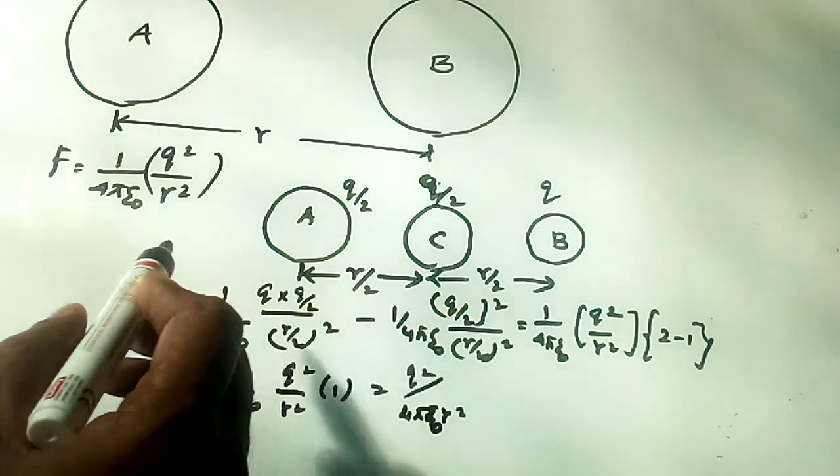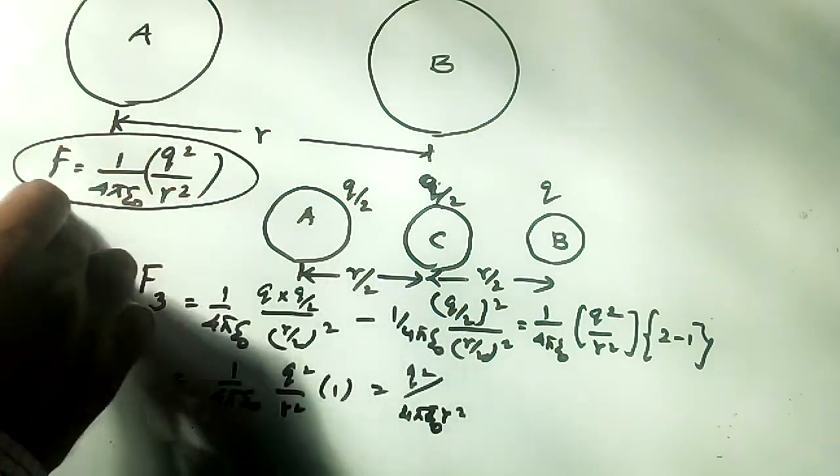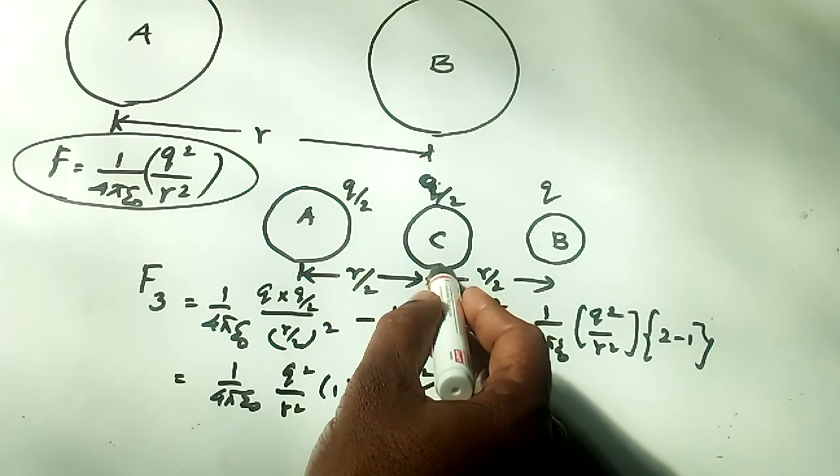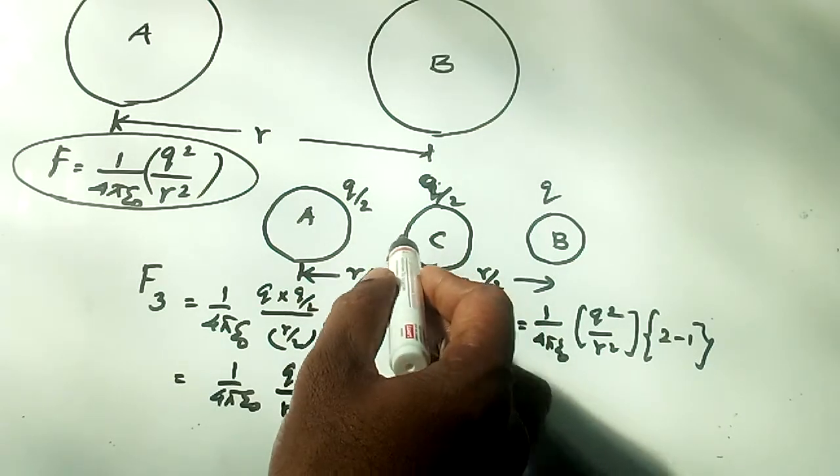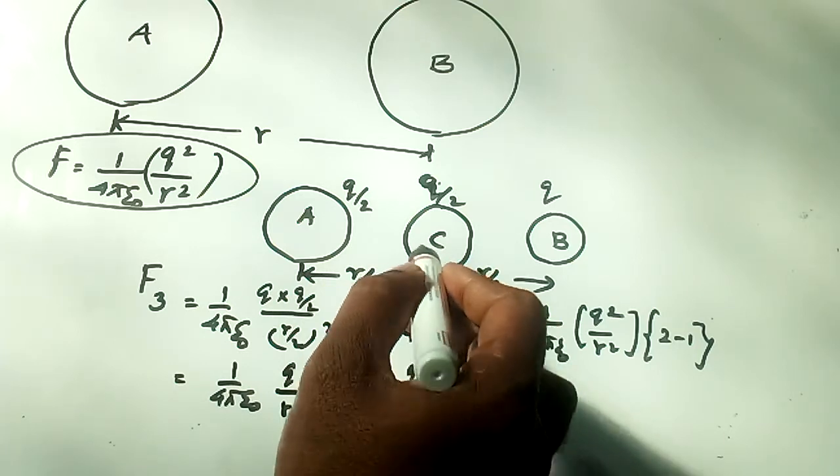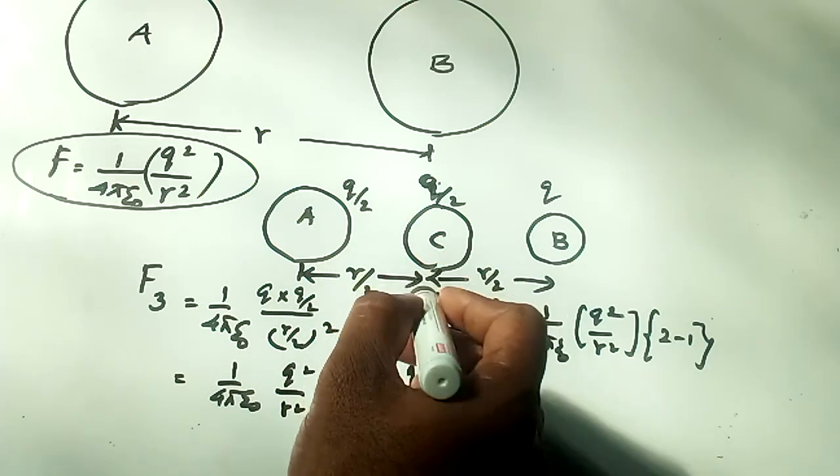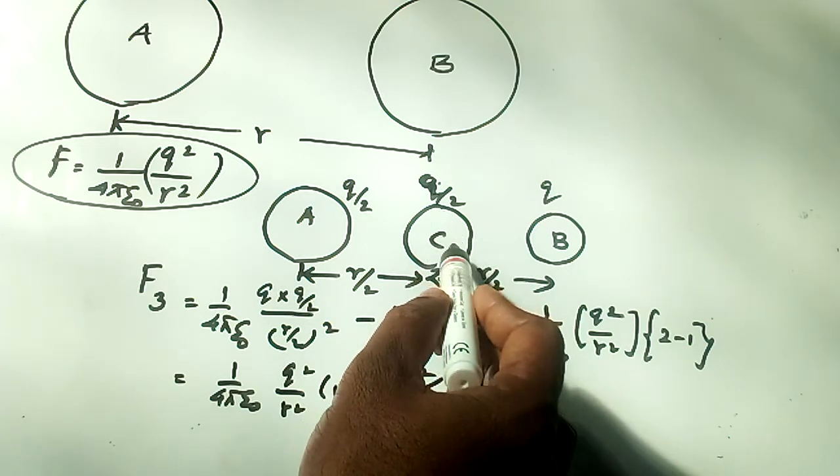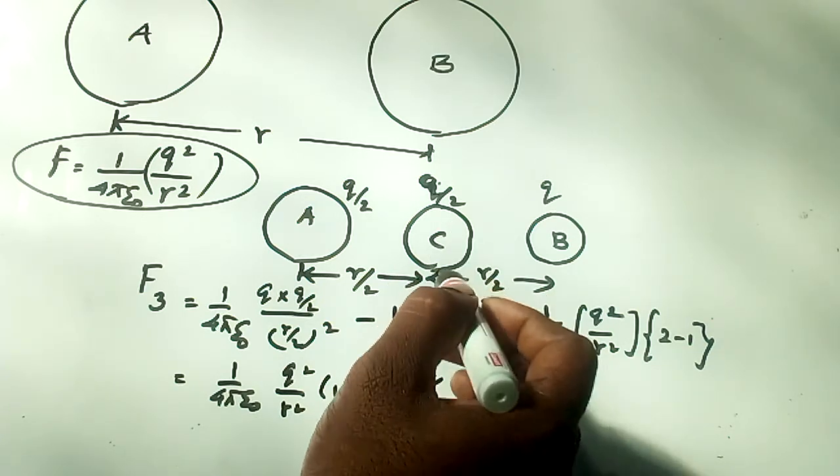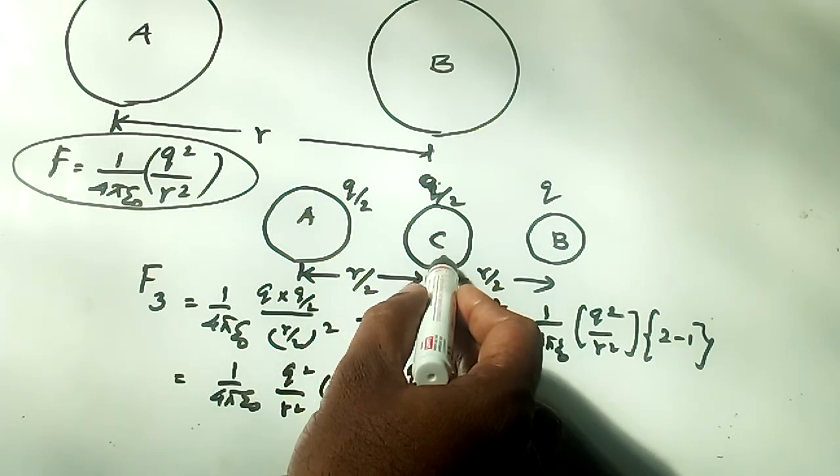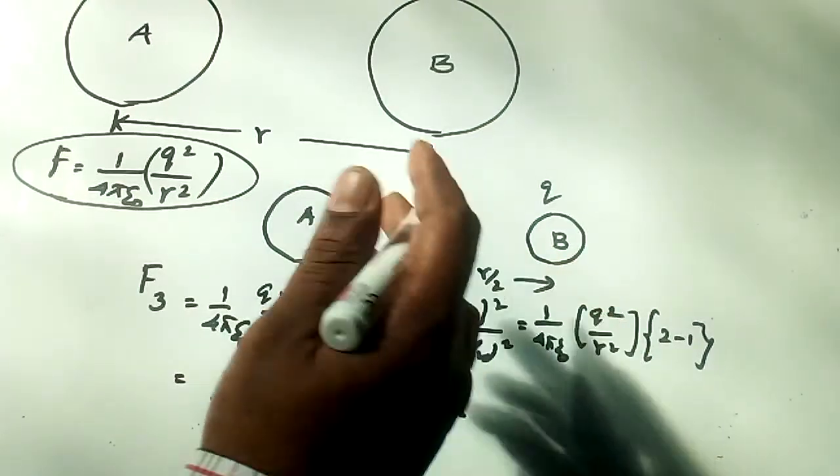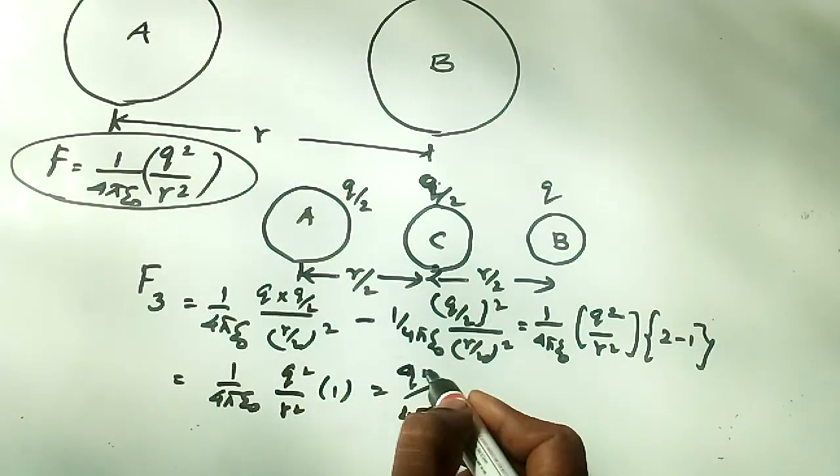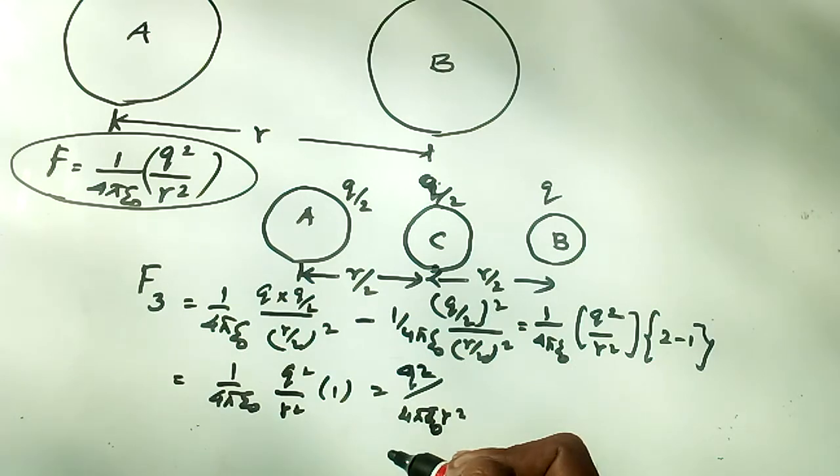This is the same as the force between A and B before touching sphere A with C and placing it in the middle. Even though a conducting sphere is placed between the two charged spheres, there is no change in the net force. This is the final conclusion.